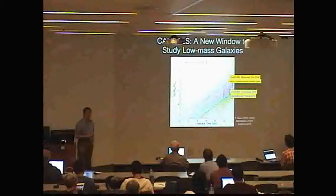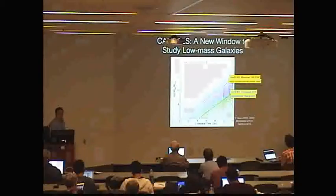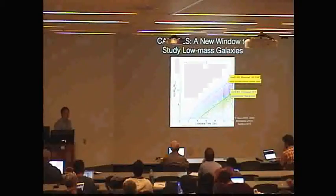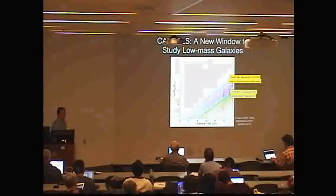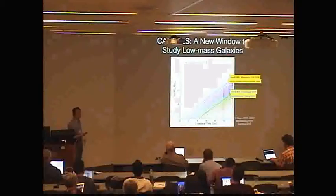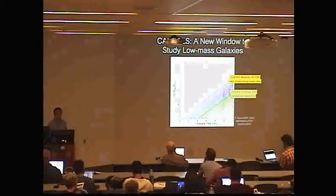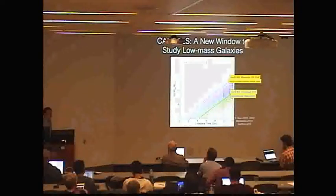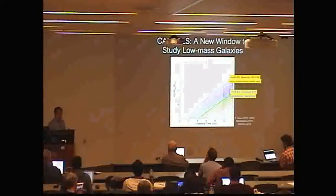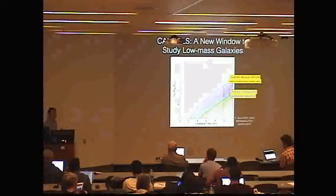Low mass galaxies are important for two reasons. First, they are the building blocks or progenitors of Milky Way-like galaxies at high redshift. So in order to understand the formation of our Milky Way, we have to understand the physical properties of low mass galaxies in the early universe. Second, low mass galaxies provide the most stringent constraints on the baryonic physics, especially the feedback models, because in those low mass galaxies the gravitational potential wells are shallow, so the effect of feedback would be most efficient in these systems.